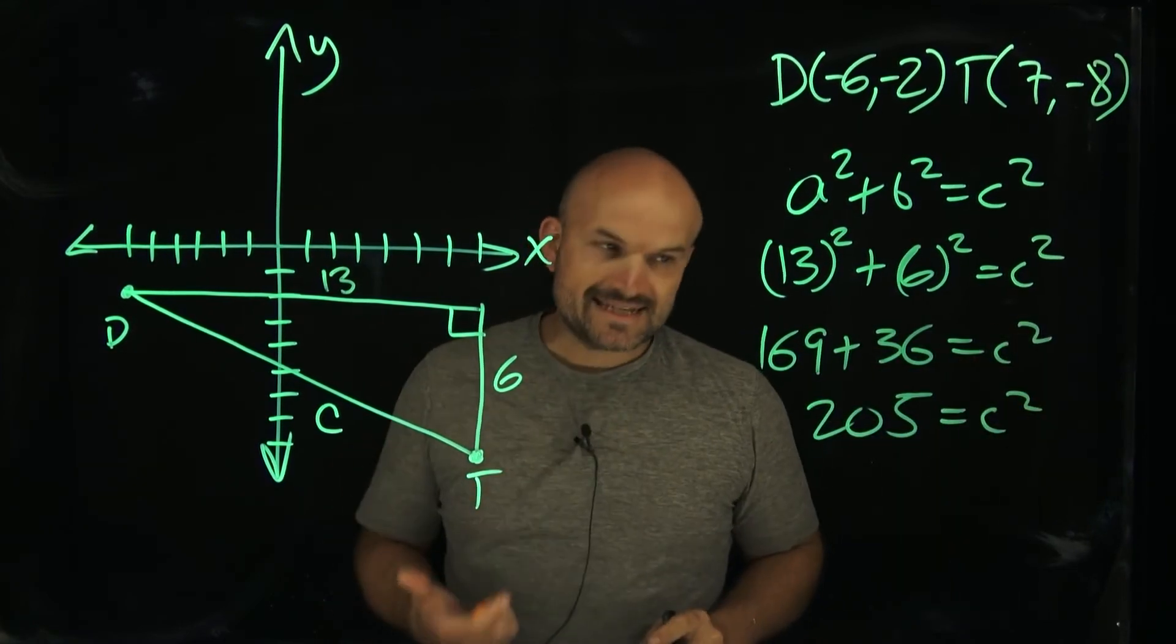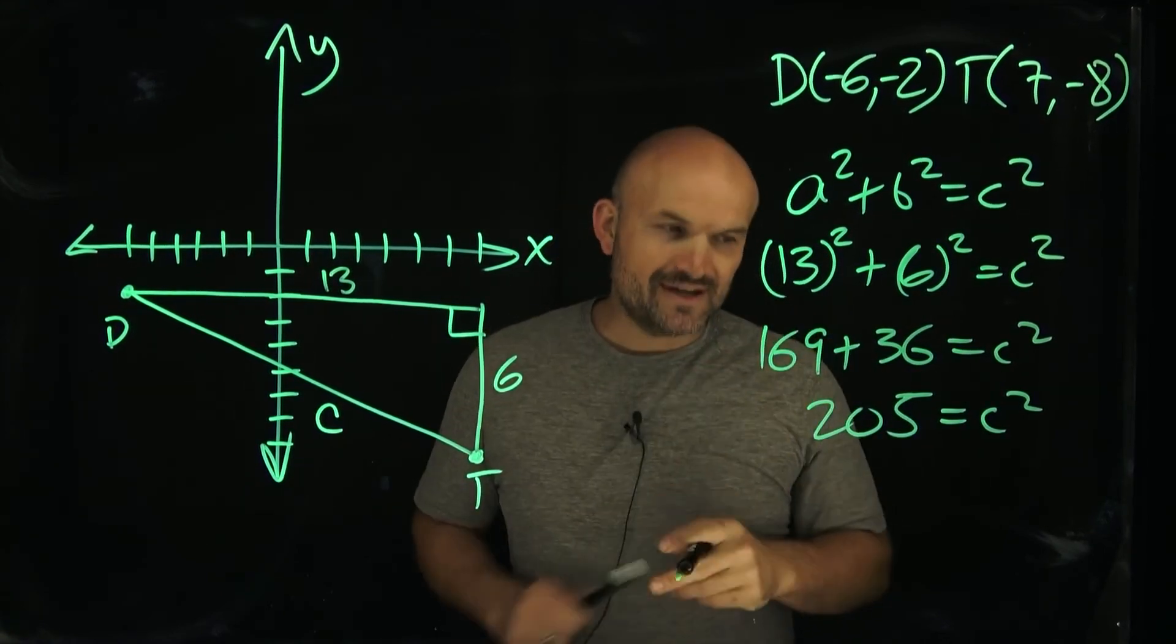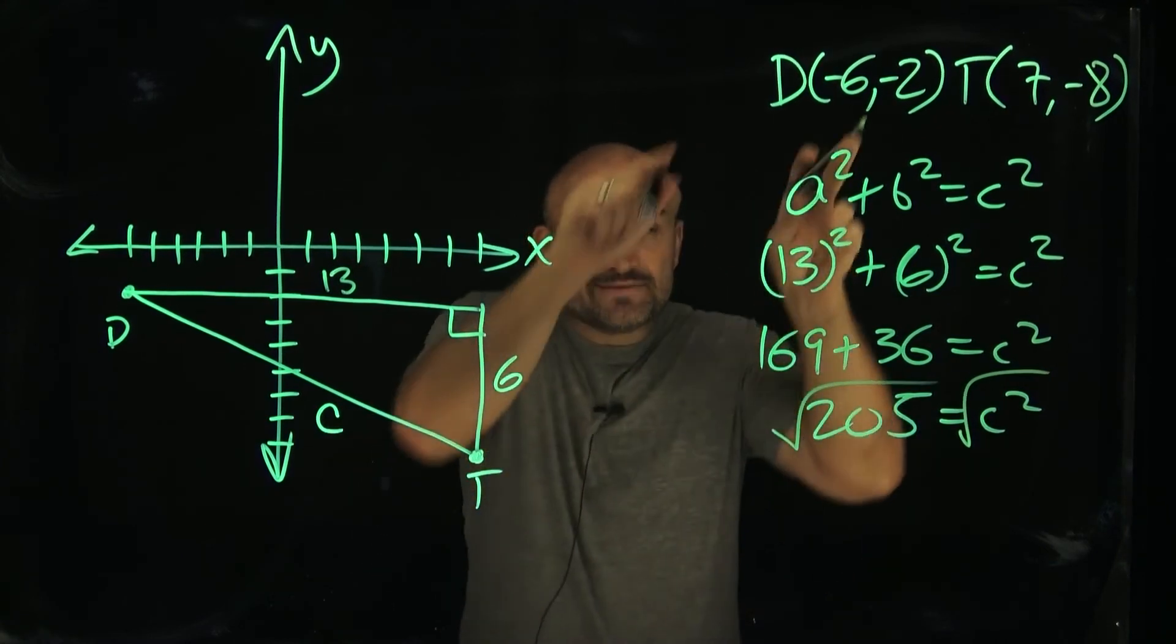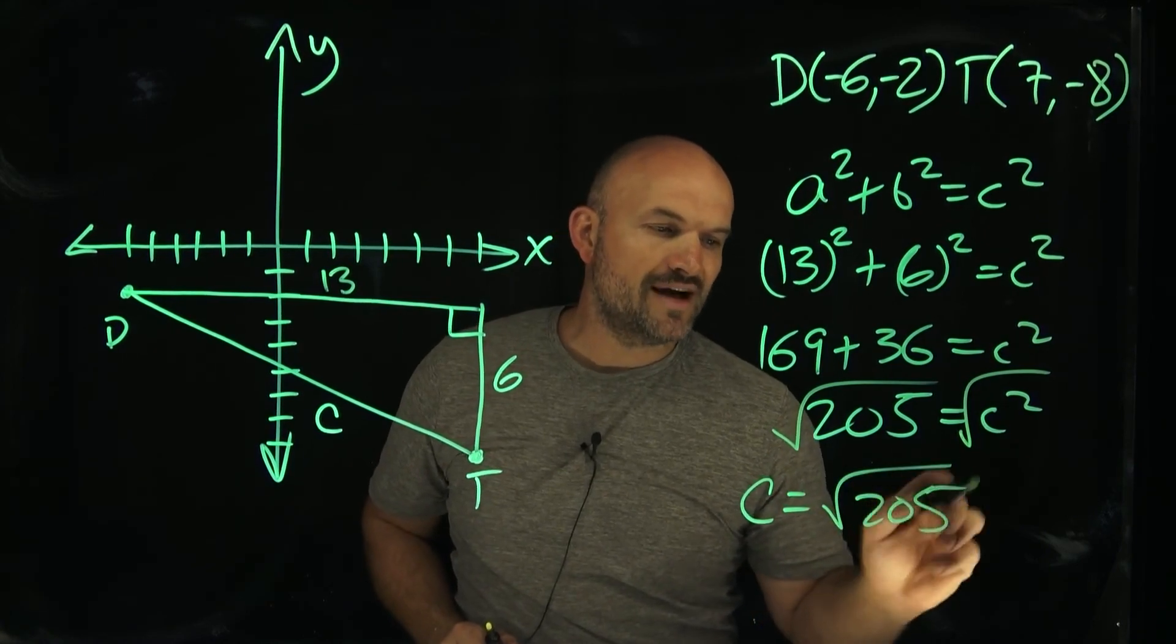Okay. Now again, the last step is this is not your answer. A lot of times if you're taking a test or it's a multiple choice, that's going to show up. You have to be very careful to make sure you take the square root at the end. So therefore, the distance between these two points by using the Pythagorean Theorem is going to equal to the square root of 205.